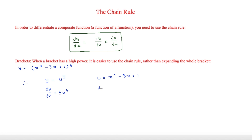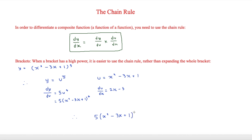We can also say that du over dx equals 2x minus 3. Substituting u back in, dy over du becomes 5 times (x squared minus 3x plus 1) to the 4. Therefore, using dy over dx equals dy over du times du over dx, we get dy over dx equals 5(x squared minus 3x plus 1) to the 4, times (2x minus 3). That is our final answer.